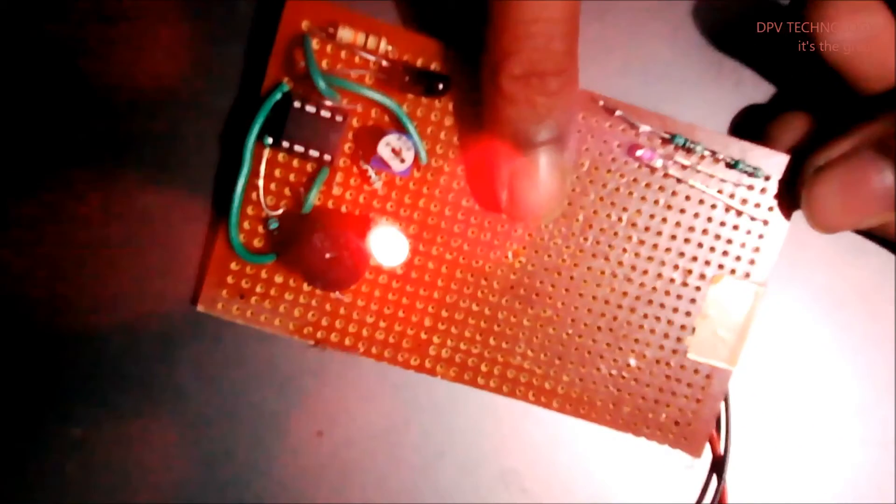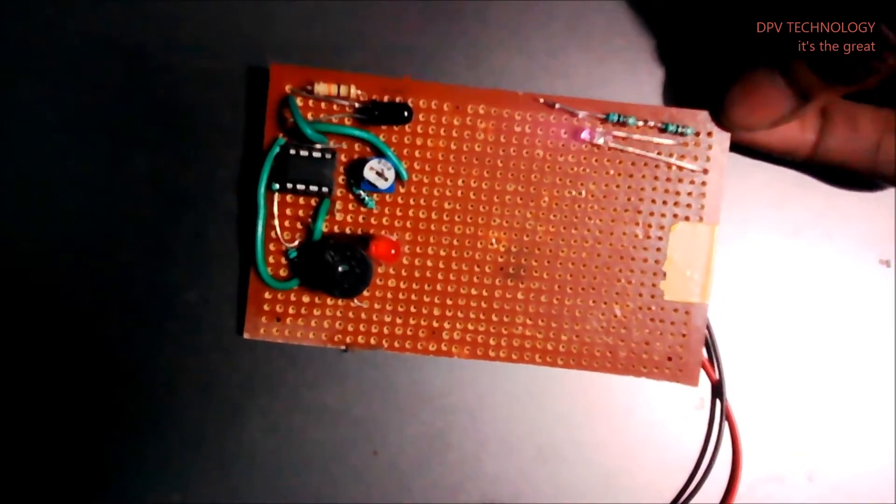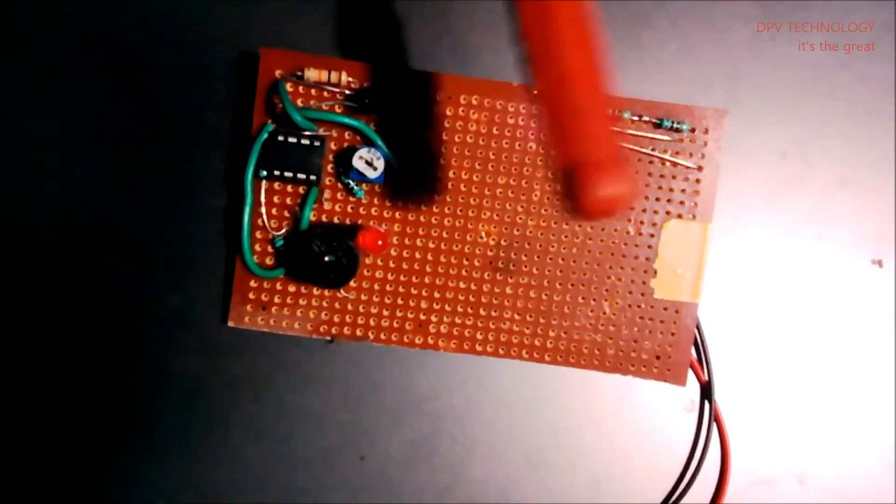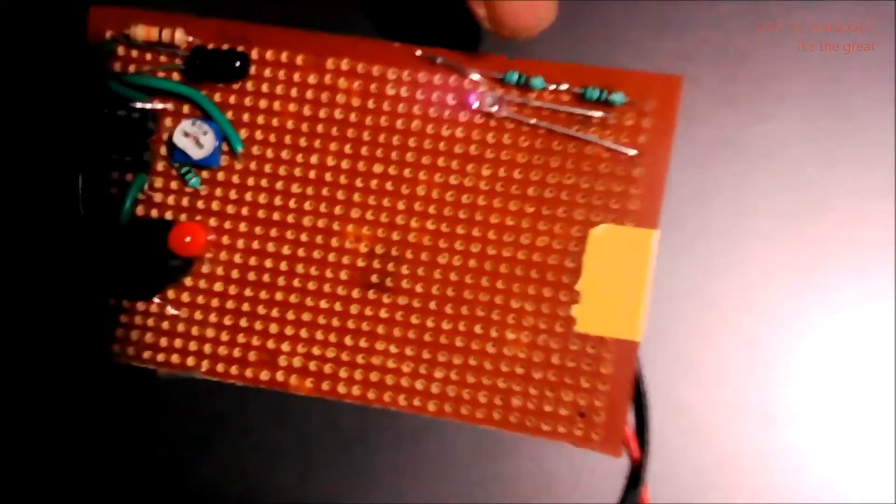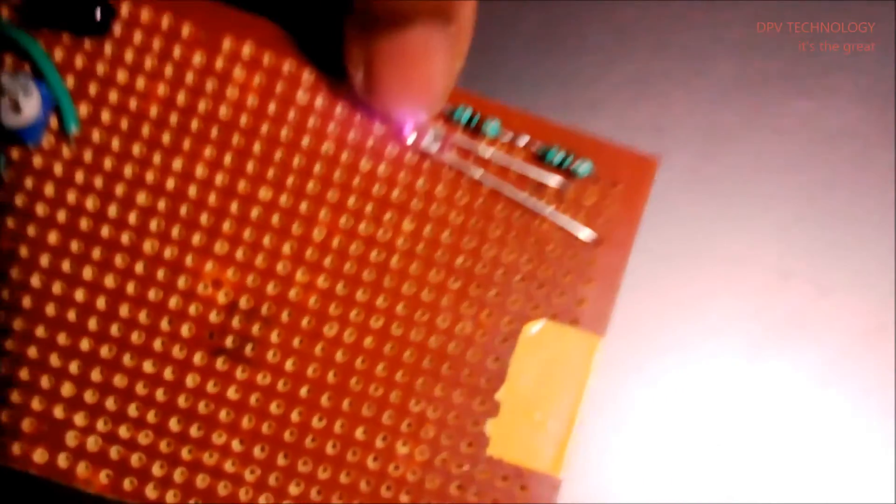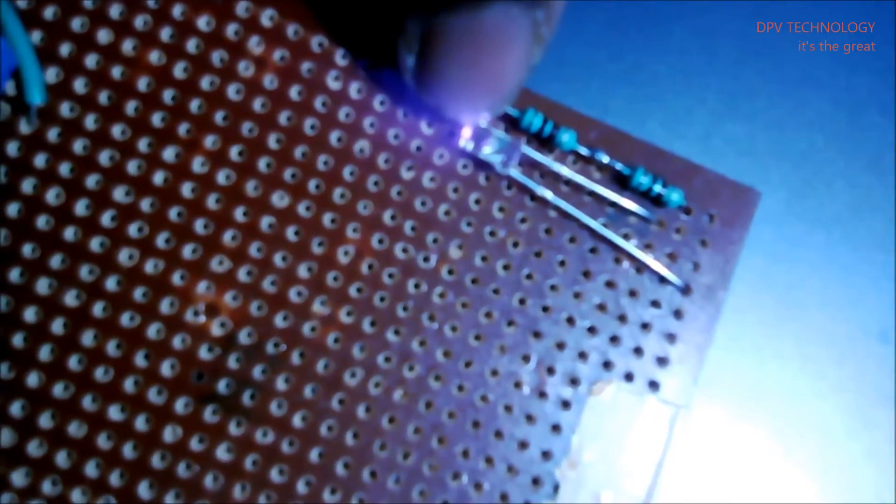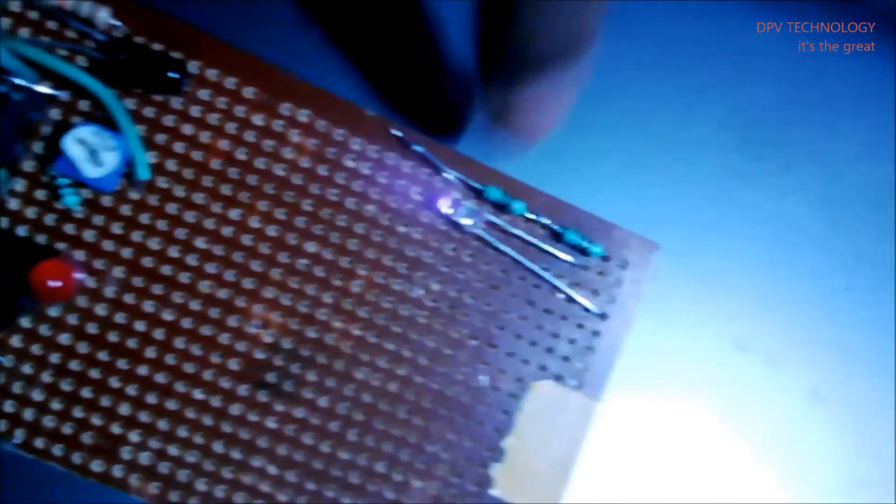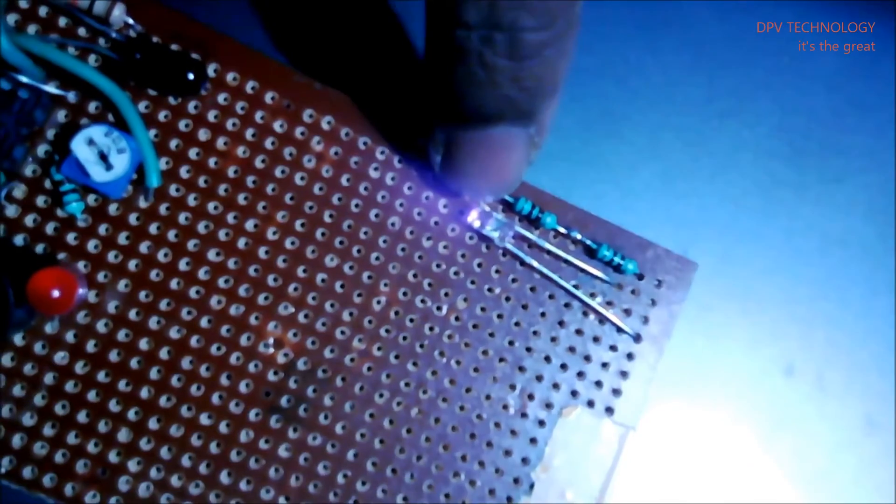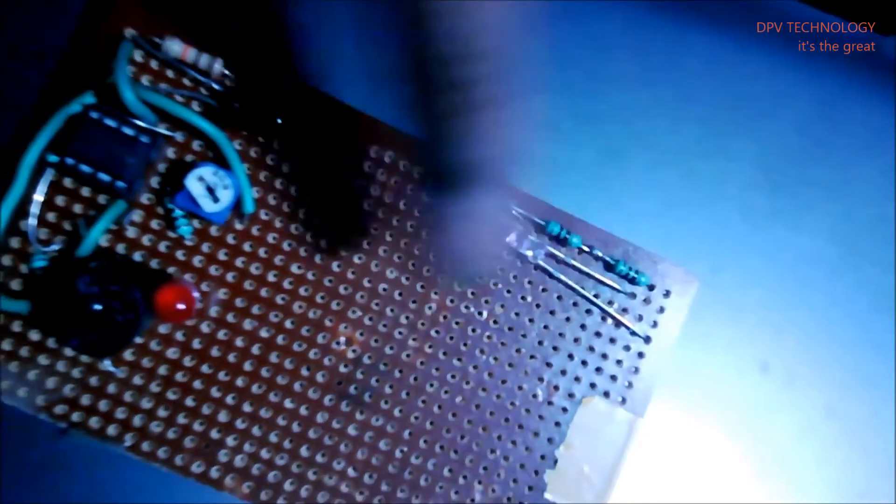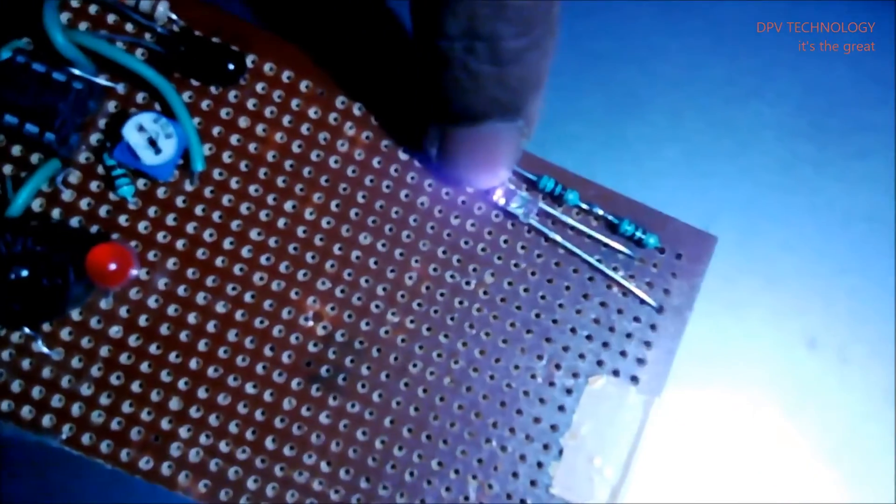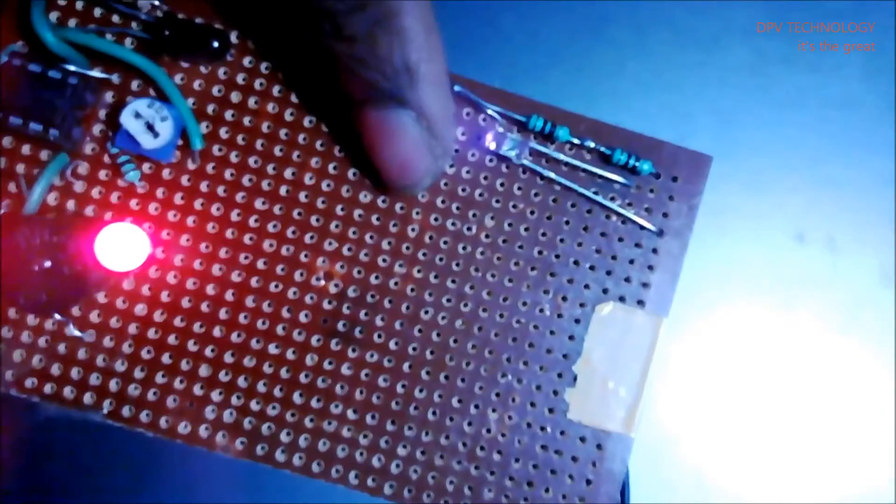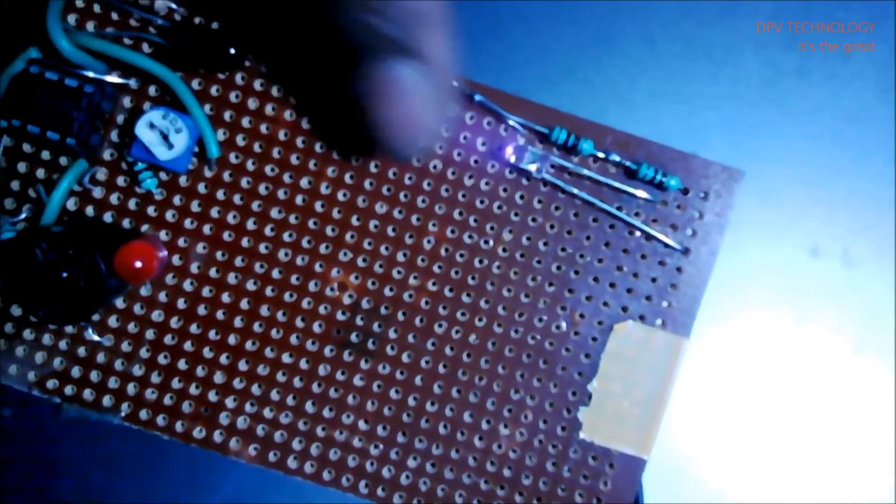You see the LED, this IR transmitter is glowing. But if you see with your naked eye then you will not be able to see this because this is infrared, so our eye can't see infrared. I am taking this with camera, and that is why you can see this.